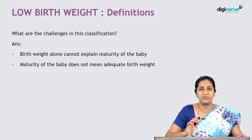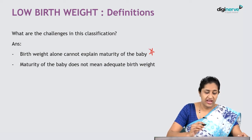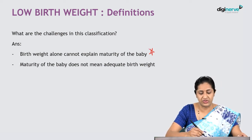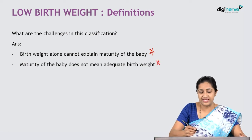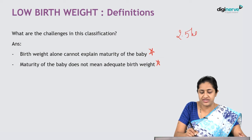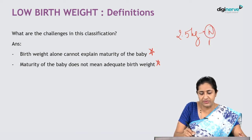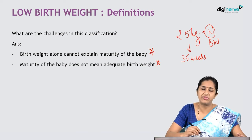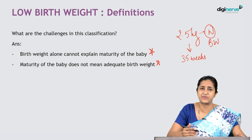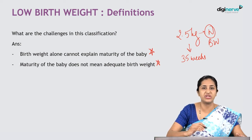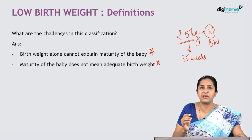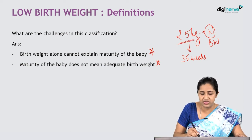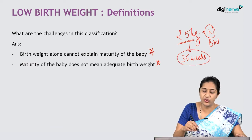Birth weight alone cannot explain the maturity of the baby, and maturity does not necessarily mean adequate birth weight. For example, a baby weighing 2.5 kg is not low birth weight by definition — it is a normal birth weight baby. But if that baby was delivered at 35 weeks gestation, it is born nearly five weeks before the expected date of delivery. According to birth weight it appears normal, but it has all the problems of a preterm baby.